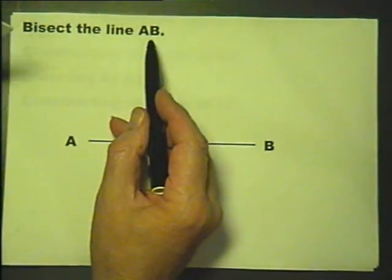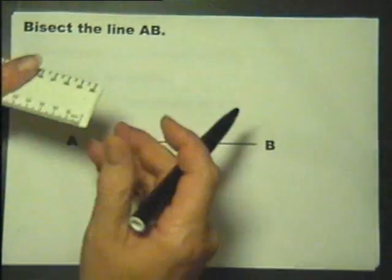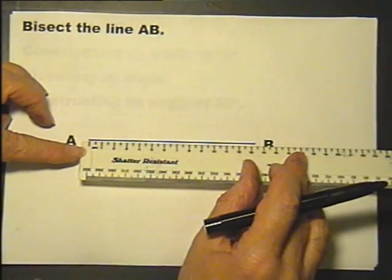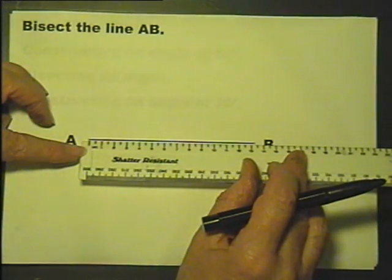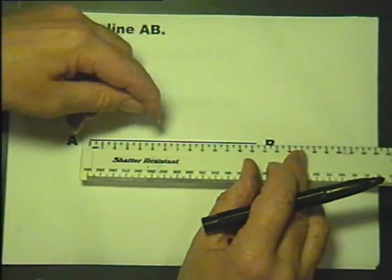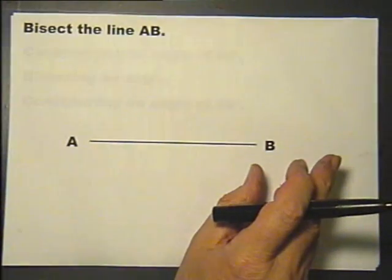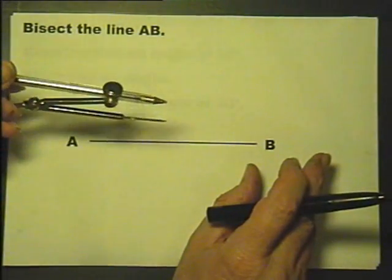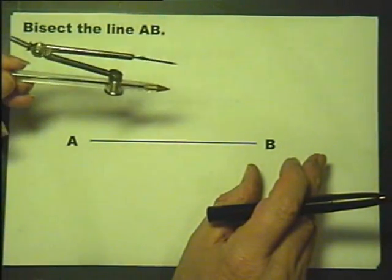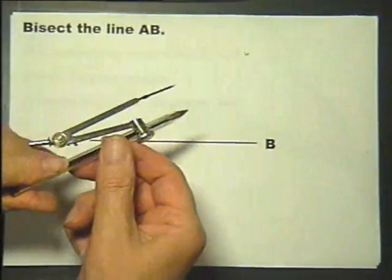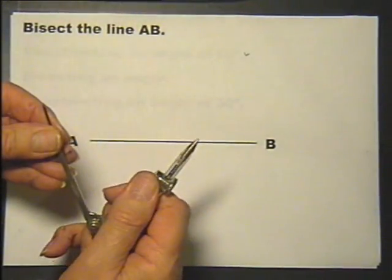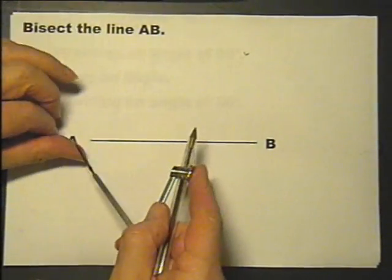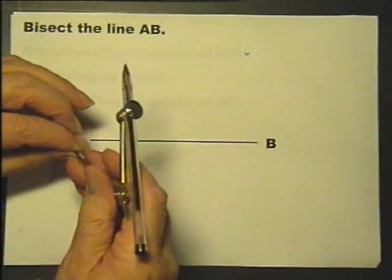Bisect the line AB, that means cutting in half. Now if you actually measure it with the ruler and say that's 13 centimeters or something like that and mark half, you'll get no marks at all for that. To bisect a line you must use a pair of compasses and not measure with a ruler at all. The way we do it is you open the compasses to any distance you like as long as it's more than halfway. You can guess more than halfway quite easily.